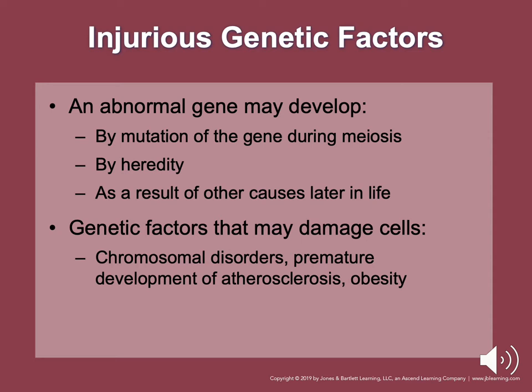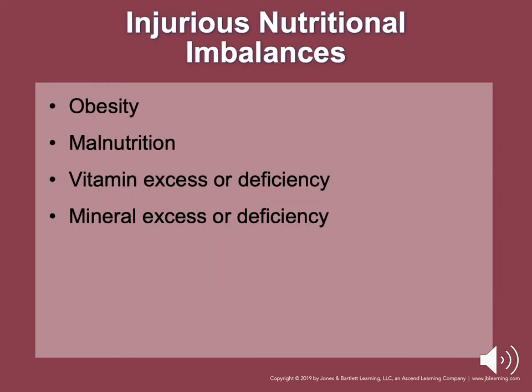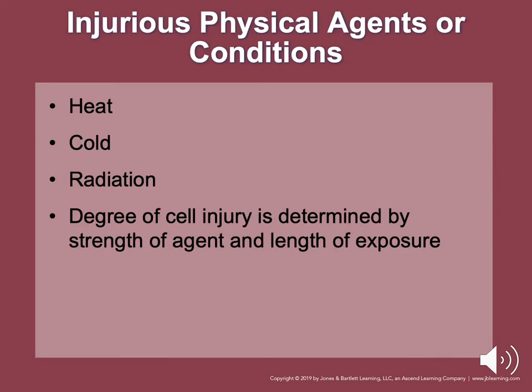Injuries from nutritional imbalance include obesity, malnutrition, vitamin excess or deficiency, and mineral excess or deficiency. Physical agents or conditions such as heat, cold, and radiation — if exposed for a long period of time — can also cause injury. The degree of cell injury is determined by the strength of the agent and the length of exposure the cell is exposed to that opposing agent.